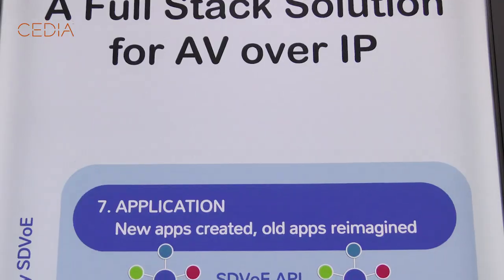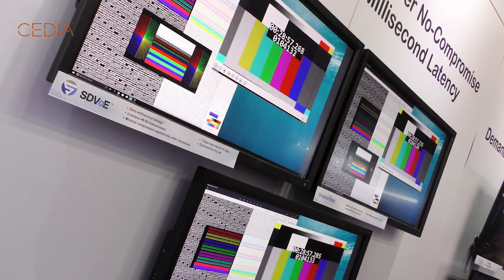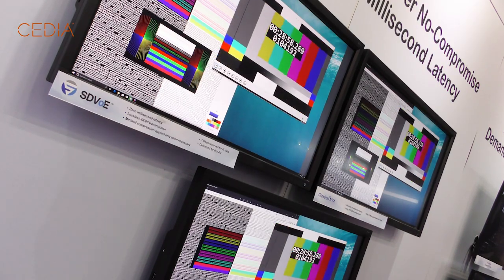AV over IP is infinitely scalable. We use an off-the-shelf standard switch at the core — it can be either 1 gig or 10 gig. That's the big question right now, and there seem to be a lot of opinions and two different camps. It depends who you talk to. SDVoE, for example, is based on 10 gig — of course they're going to say everything's going that way. But there are a lot of great 1 gig solutions out there as well.